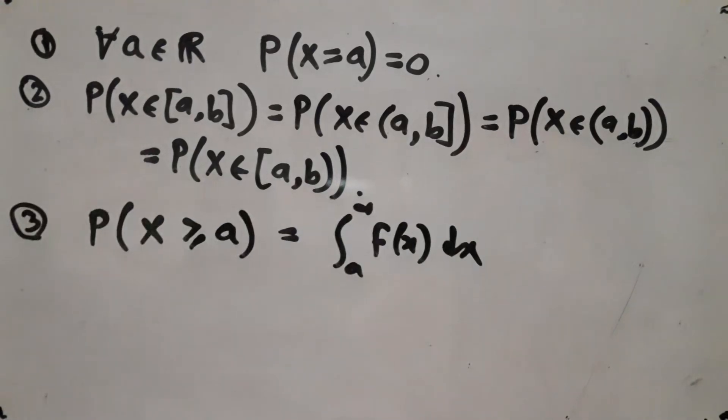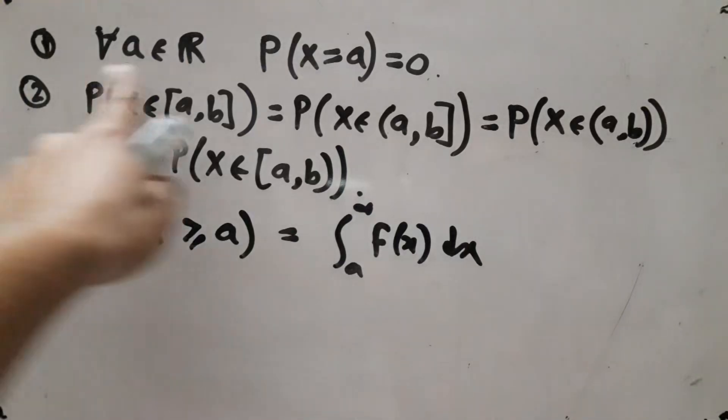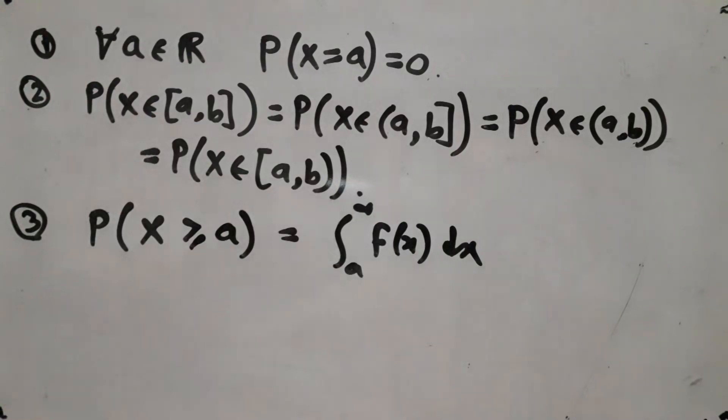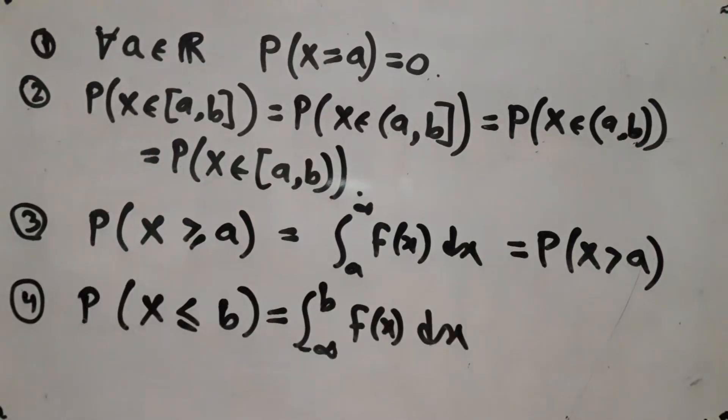So we get probability X greater than or equal to a is the integral from a to infinity, and since we have this condition I can drop the equality without changing the probability. I can do the same thing with the reverse inequality, and here also I can drop the equality.